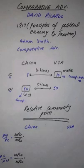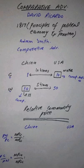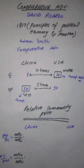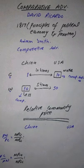Dear students, in this lecture we will discuss the comparative advantage theory of international trade presented by David Ricardo. In 1817, Ricardo published his Principles of Political Economy and Taxation, in which he presented the law of comparative advantage, which is one of the most important and still unchallenged laws of international trade.